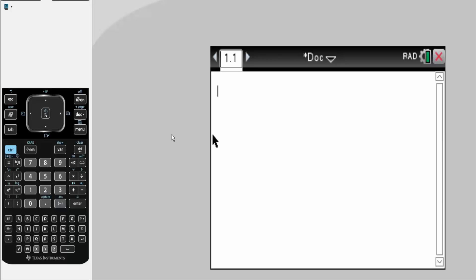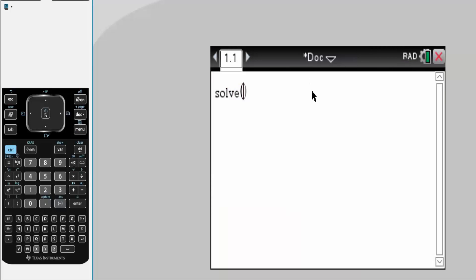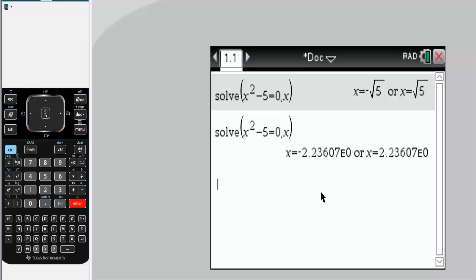Now I'll do a quick check using the TI-Inspire CX CAS. So if you have this calculator, you can check. So menu, algebra, solve. We have x squared minus 5 is equal to 0, comma x. We want to solve for x. We want an approximation for this answer. So I can hit control, enter.